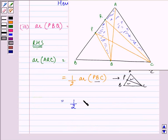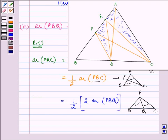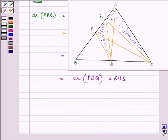Now, PBC is twice the area of PBQ. In triangle PBC, Q is the midpoint of BC, so PQ is the median. This big triangle PBC can be written as twice of PBQ. So half of PBC equals area of PBQ. On simplifying, this becomes equal to area of PBQ, which is the left-hand side we were waiting for. Hence we have proved the third part.